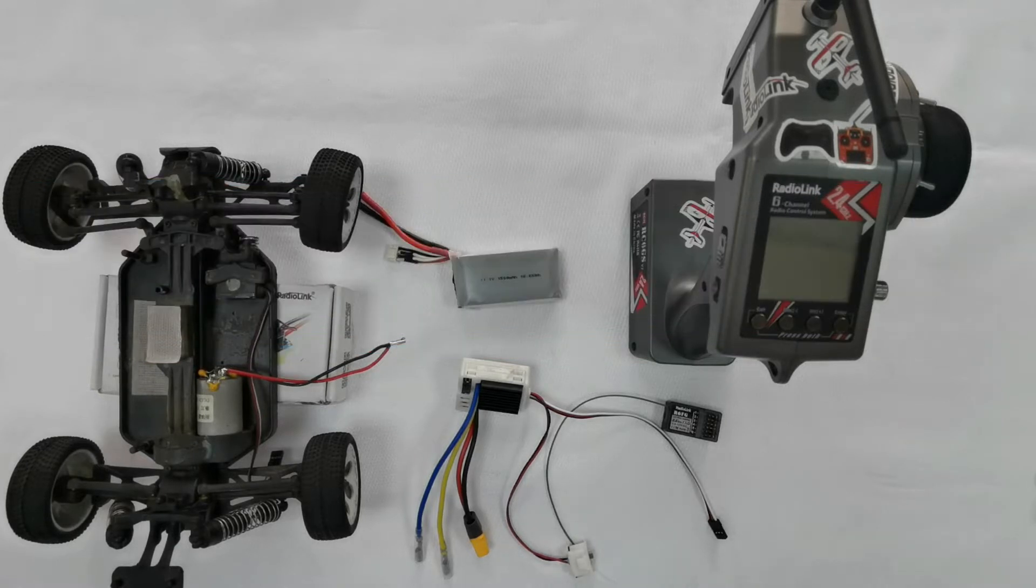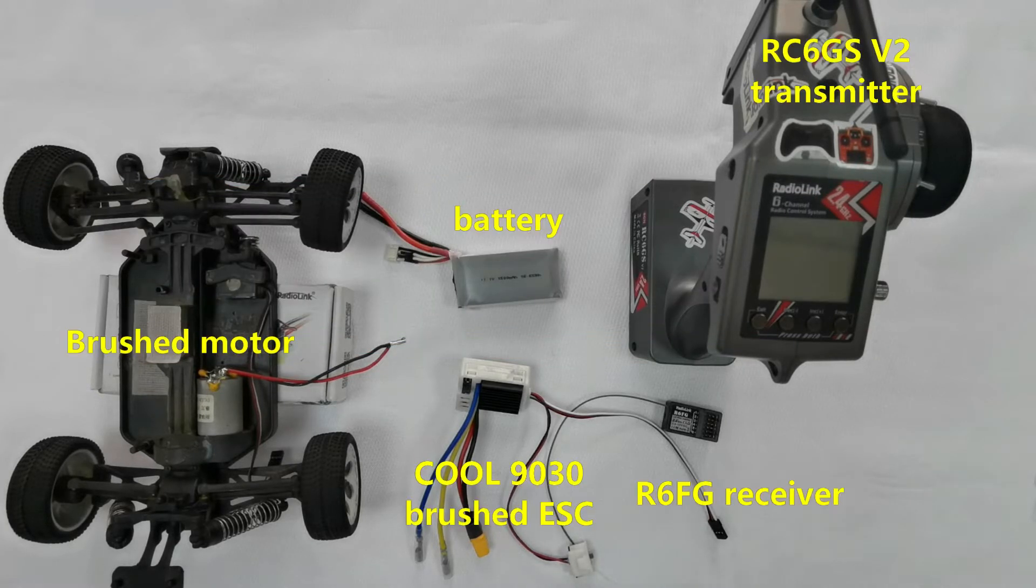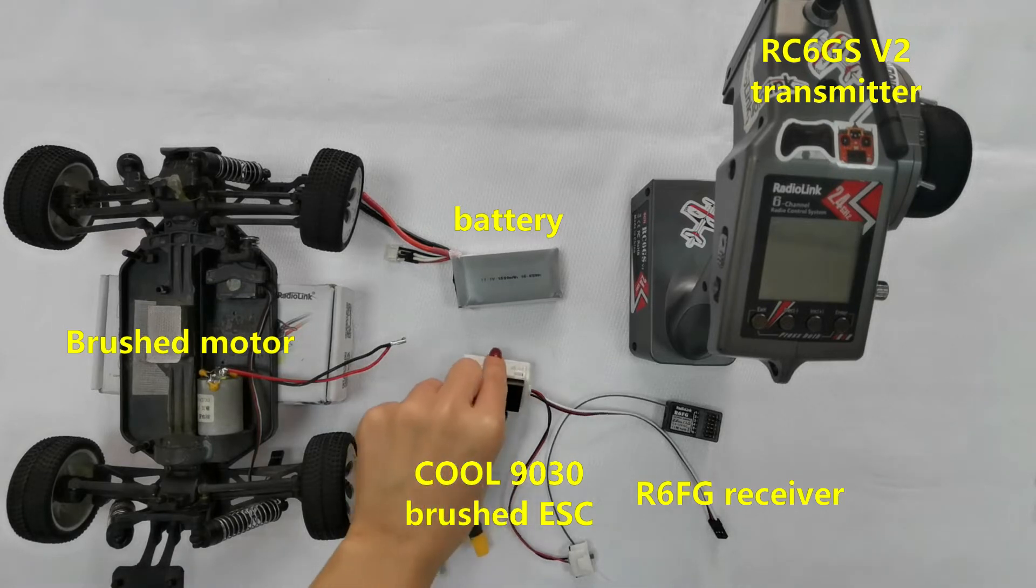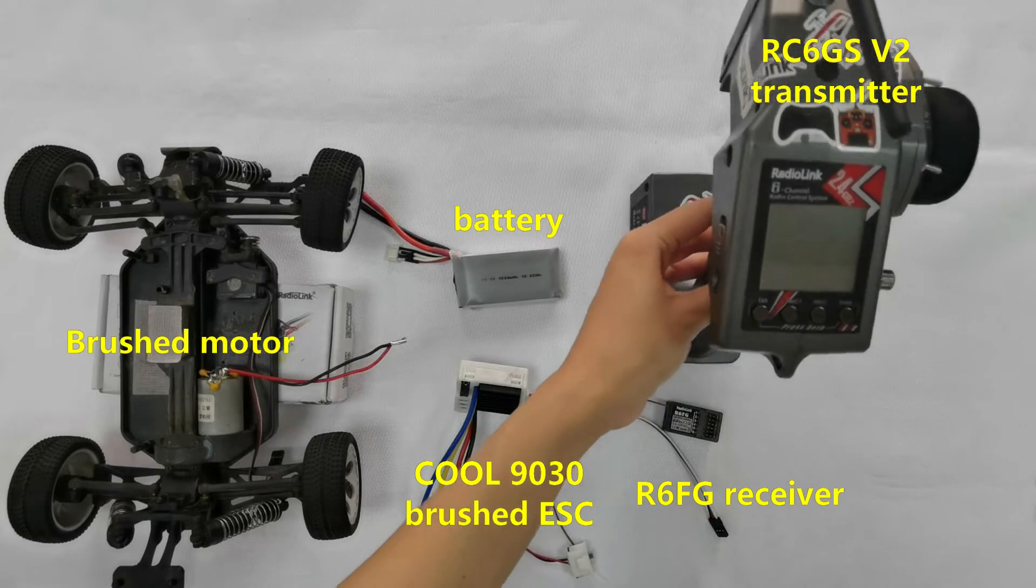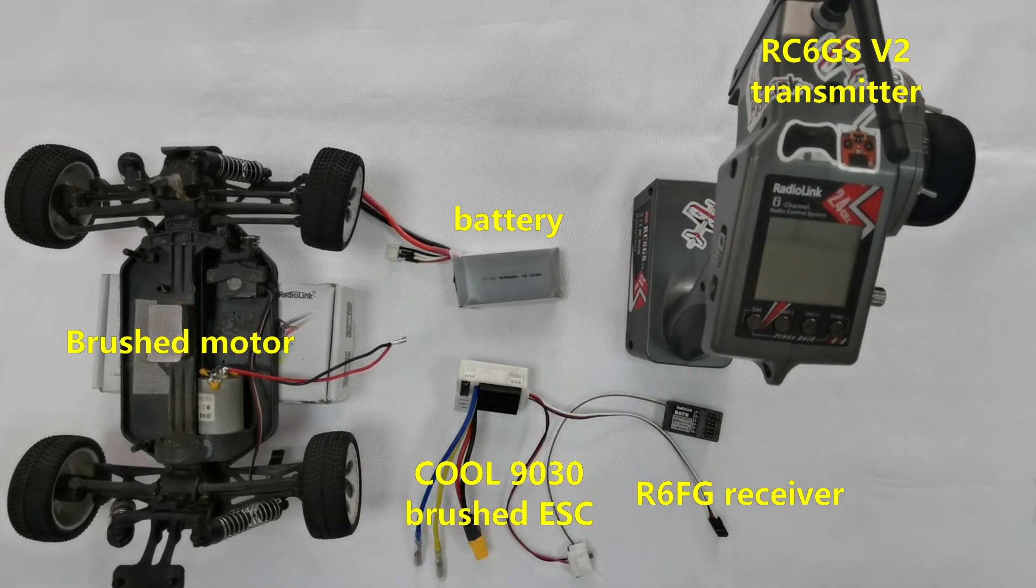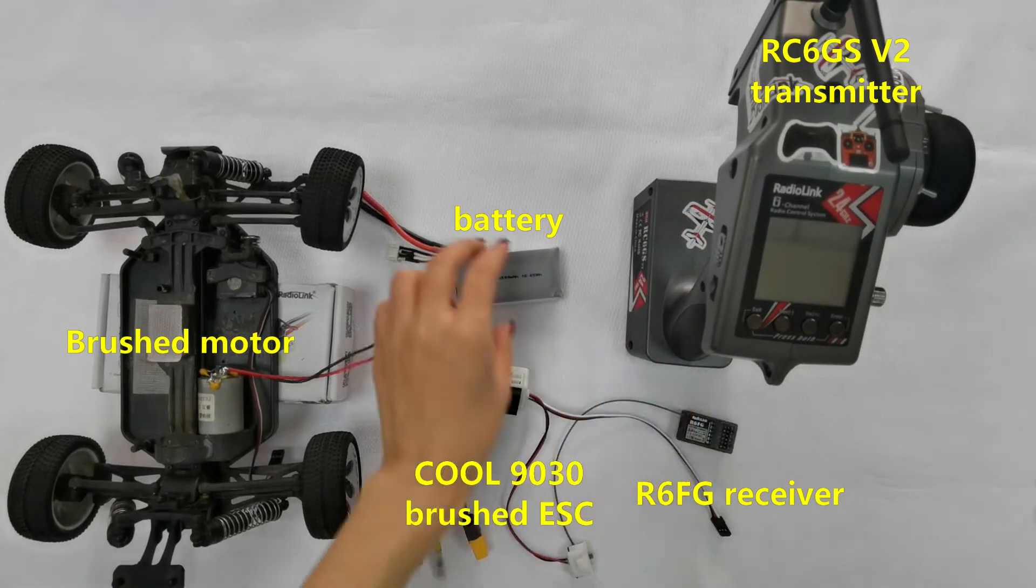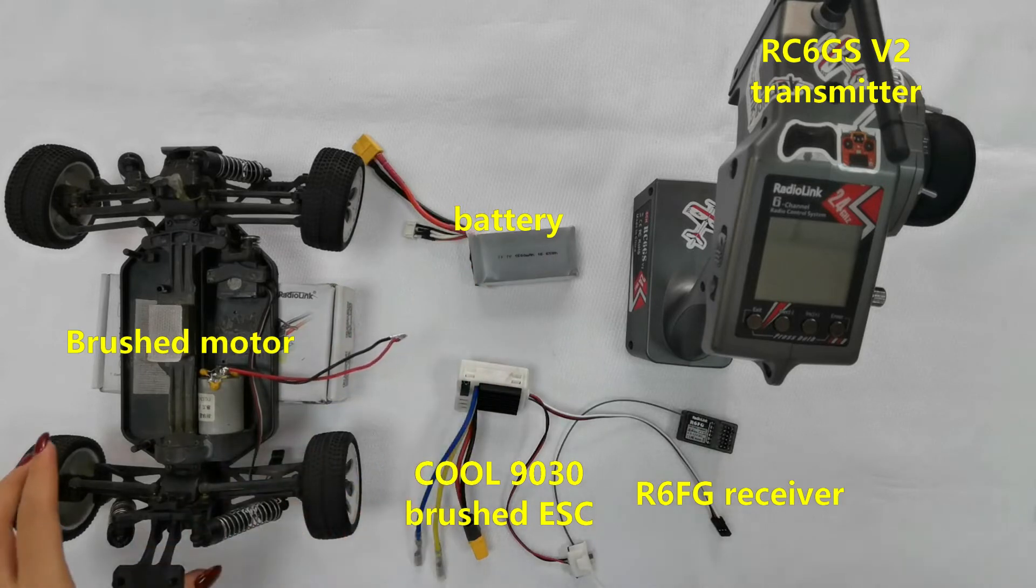Here are all the devices we need: Radiolink COOL 9030 brushed ESC, Radiolink RC6GSV2 transmitter, Radiolink R6FG receiver, one battery, and a car model with brushed motor.